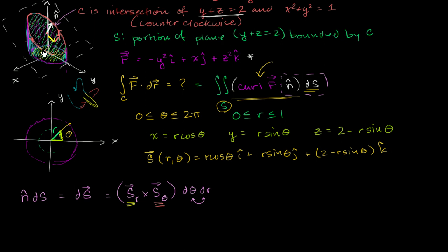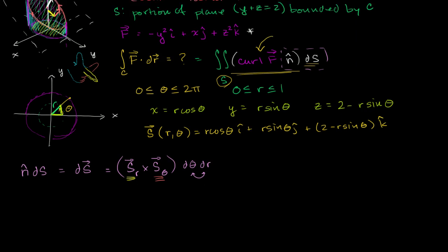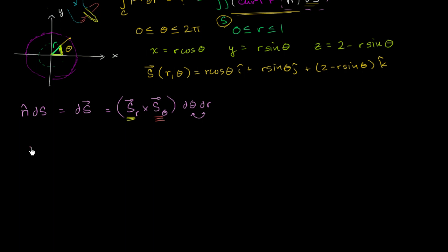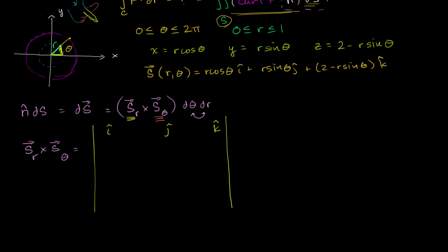So let's evaluate this cross product: the partial of our parameterization with respect to r crossed with the partial with respect to theta. I'll set up the matrix to take the cross product, with i, j, and k components. For the partial with respect to r: the i component is cosine theta, the j component is sine theta, and the k component is negative sine theta.